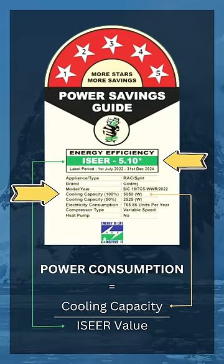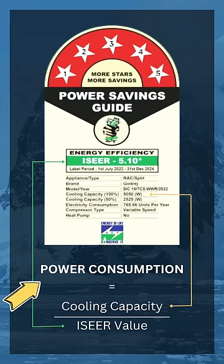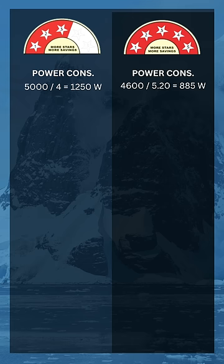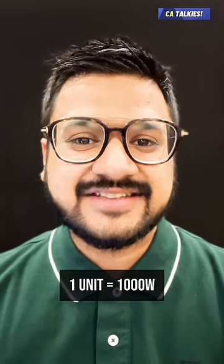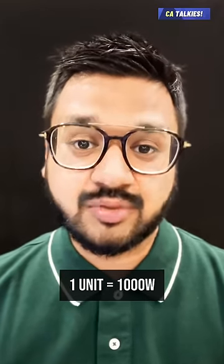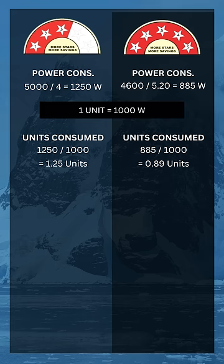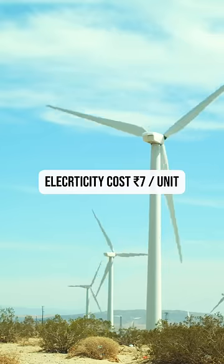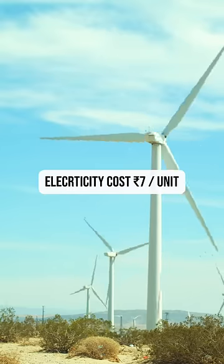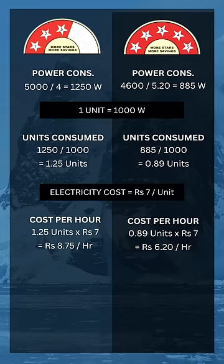Star ratings ticker पे mentioned cooling capacity को ICOP value से divide करके आपको power consumption per hour मिल जाएगी। The 3 star AC consumes 1250 watts per hour while the 5 star AC consumes 885 watts per hour. Since 1 unit of electricity is equal to 1000 watts, the 3 star AC will consume 1.25 units per hour while the 5 star AC will consume only 0.89 units per hour.